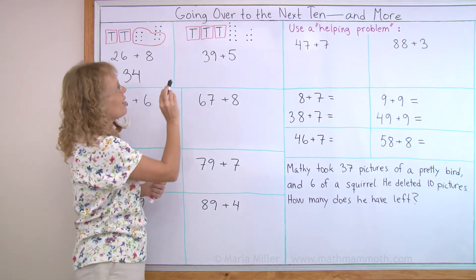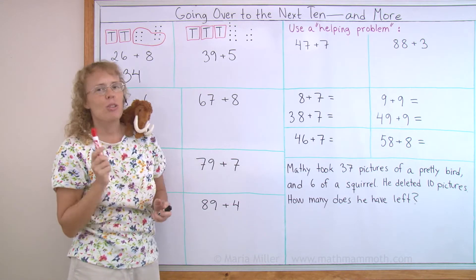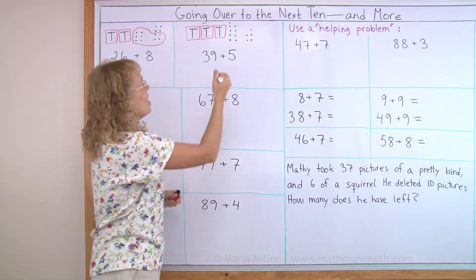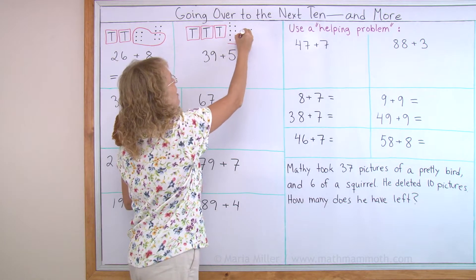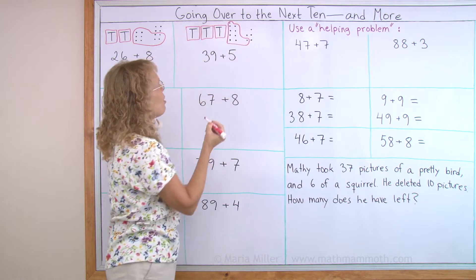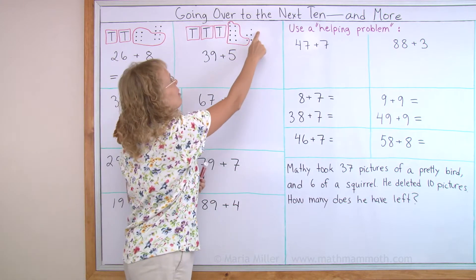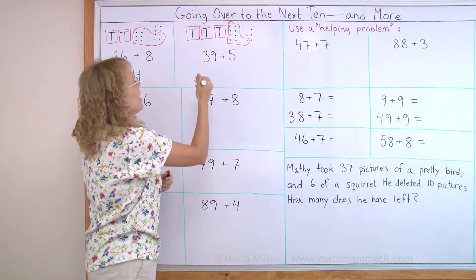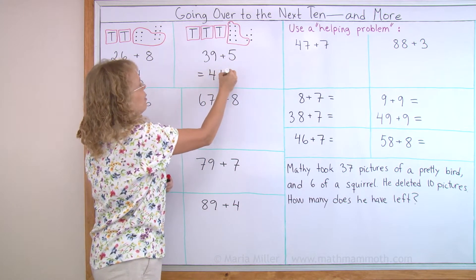Let me do it again over here. 39 plus 5. You can even use the 9 trick here. The 9 takes one dot from there. And now we have a new 10. And the 5 has become 4. And the answer is 4 tens and 4, which is 44.